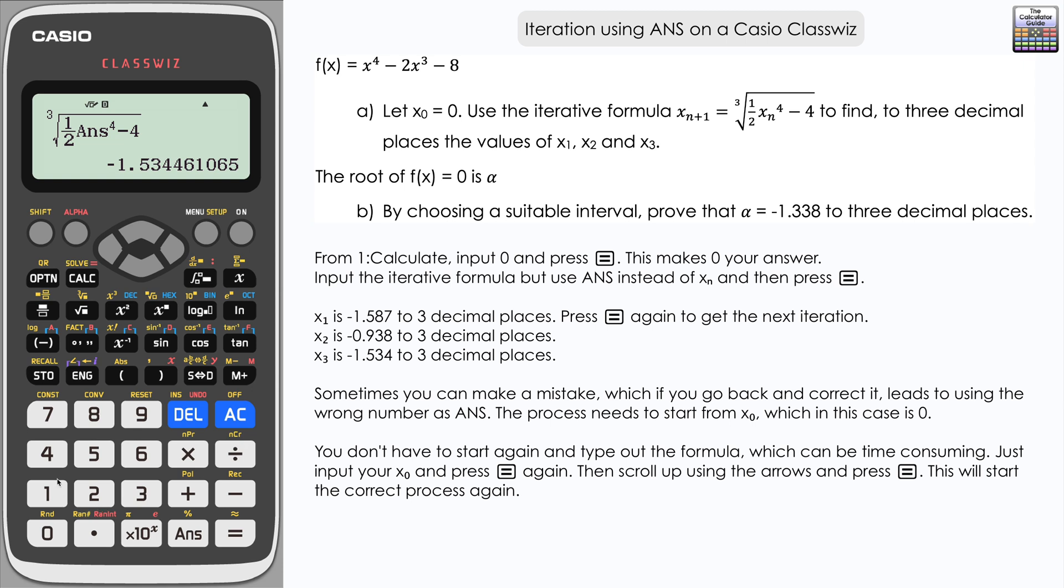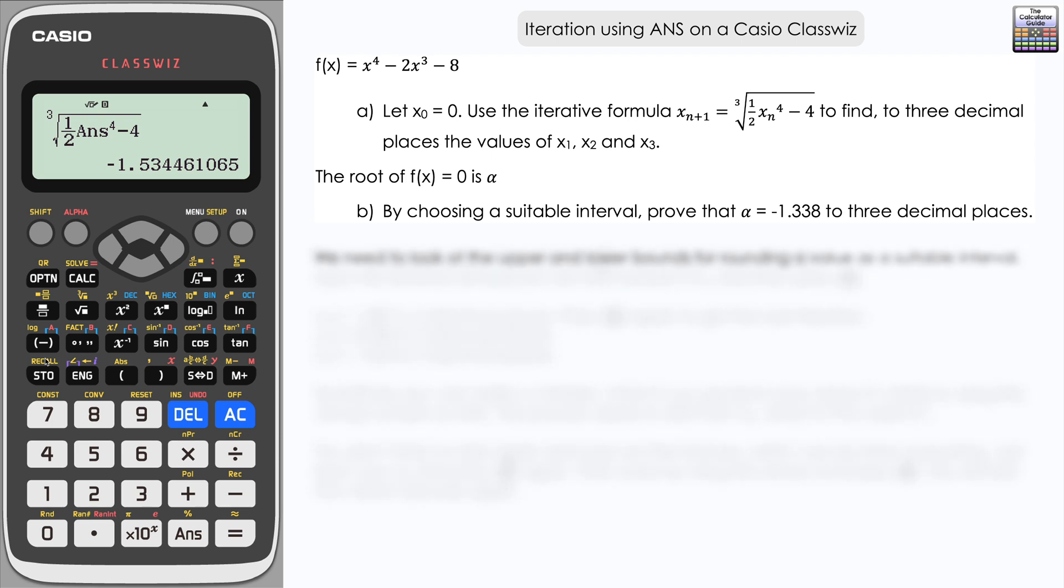If you do make a mistake and your answer becomes something that isn't your x0, you can just input that and go back to your inputted formula, which can save time. I'm going to show you for part b that we can use a similar sort of process when we're using stored values, such as values stored in x. We're looking for alpha. We've got to choose a suitable interval to prove that alpha equals negative 1.338. We're looking at upper and lower bounds to which we would round negative 1.338 to three decimal places. The lower bound would be negative 1.3375.